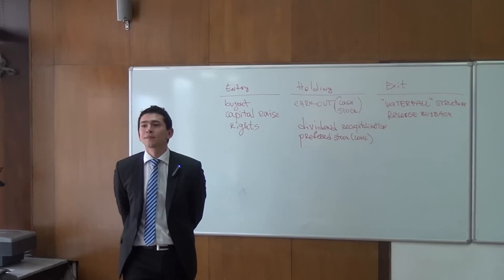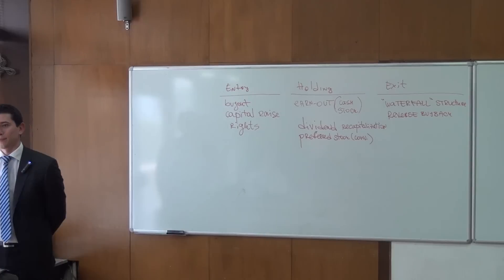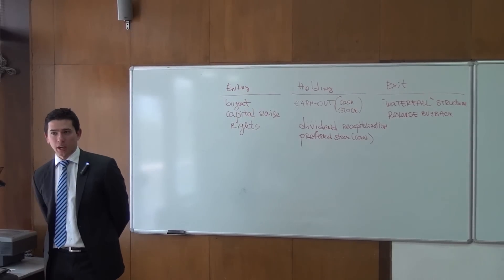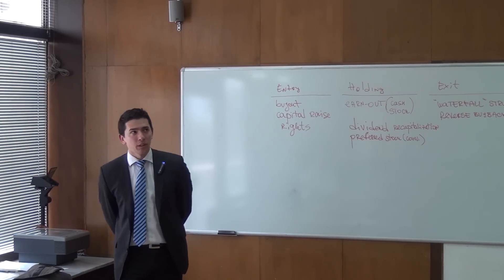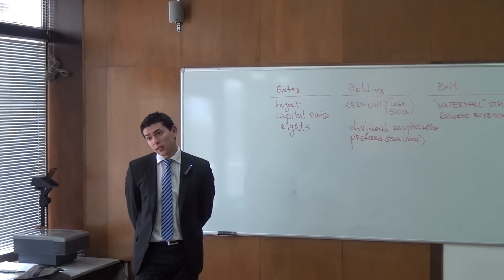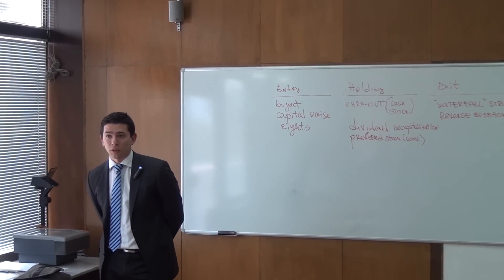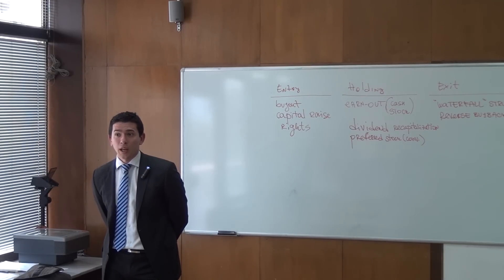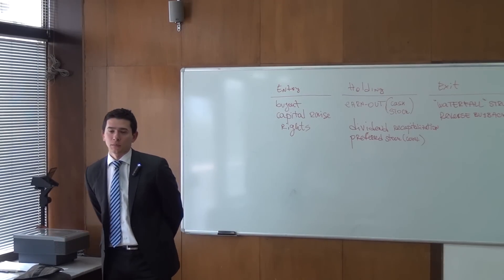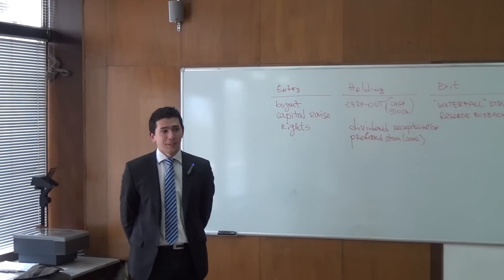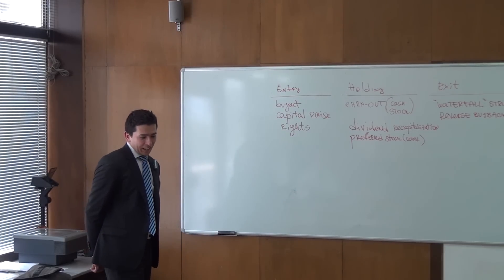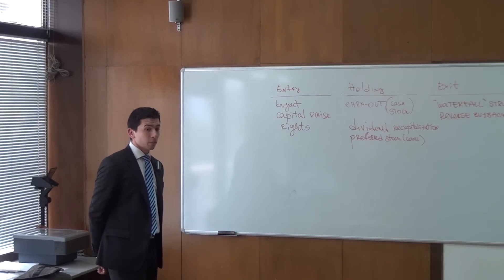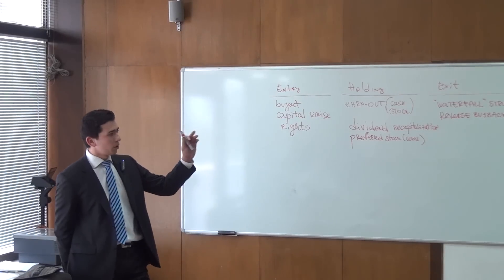What happens if at some point the entrepreneur is broke and can't do the buyback? Usually he guarantees with his equity. If he says he's going to buy us back and doesn't, we take his 50% stake in the equity and will have the right to sell to a third party. So he'd better have money if he wants to stay 15 years in the business. Also, Conditions Precedent — CPs — are valid for entry, holding, and exit.